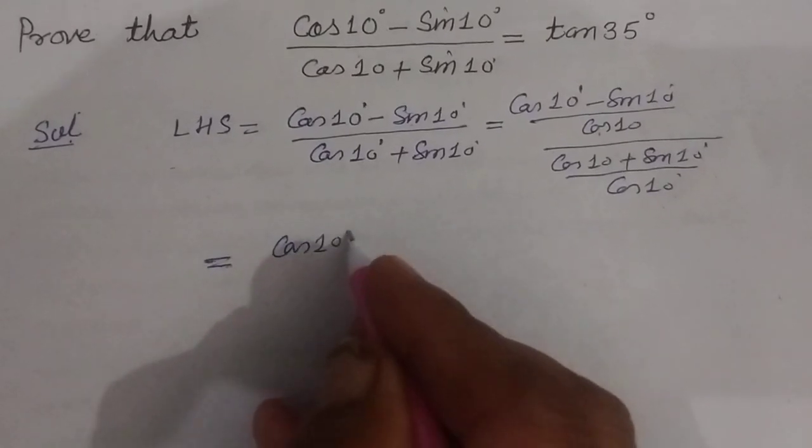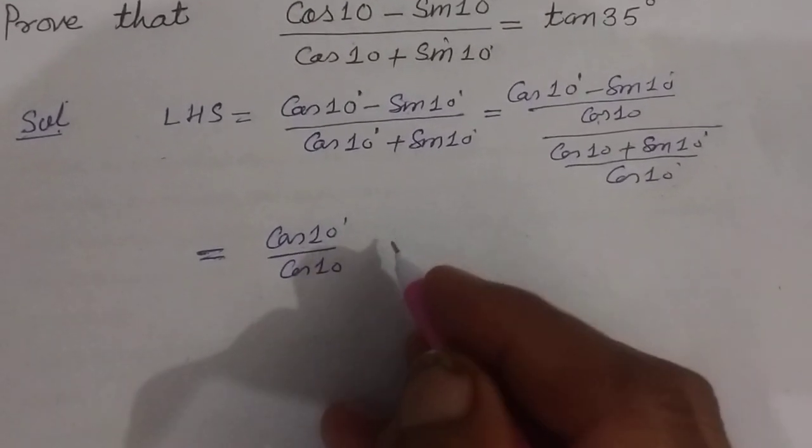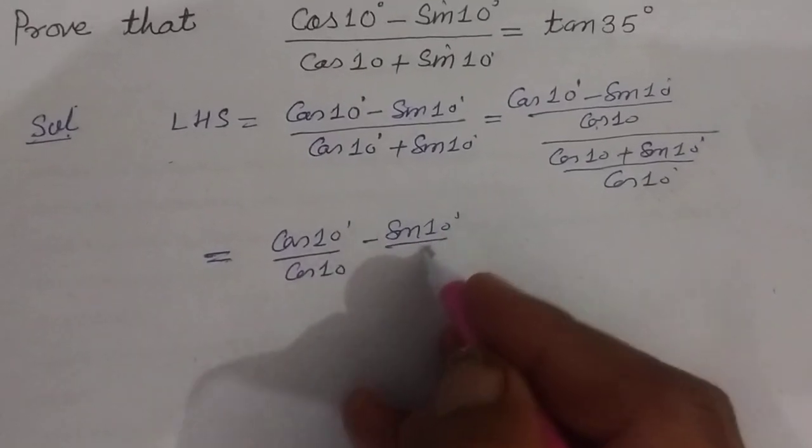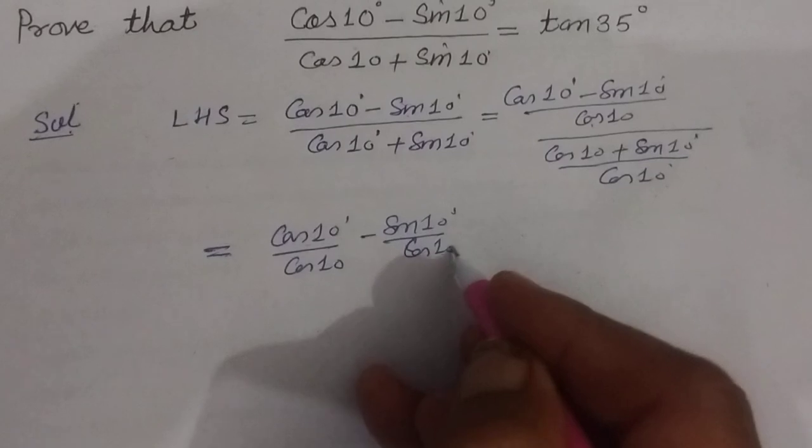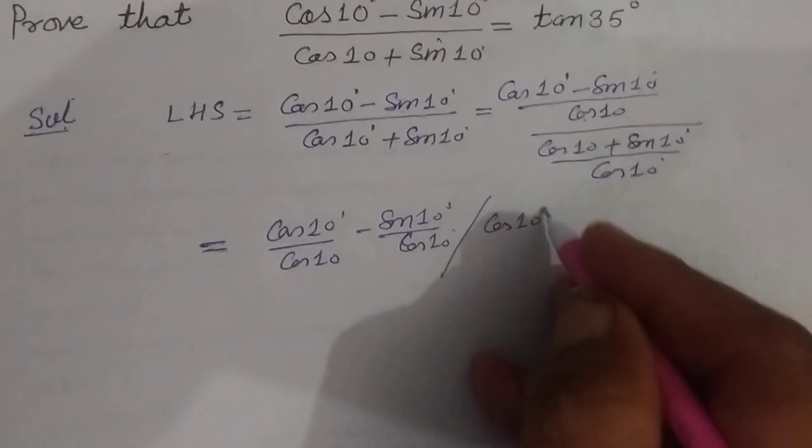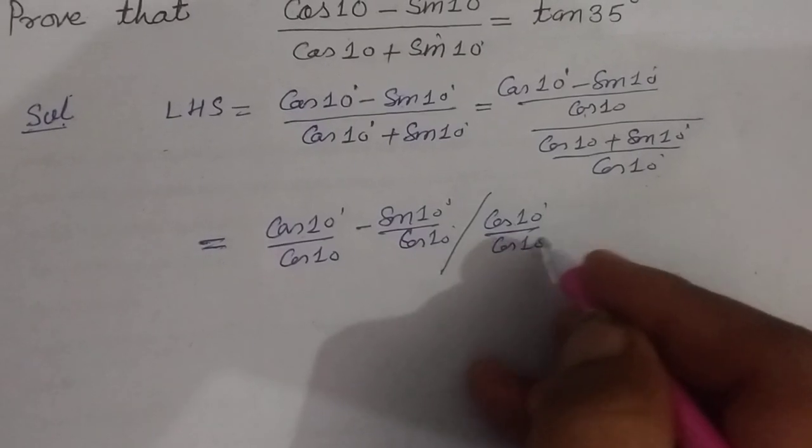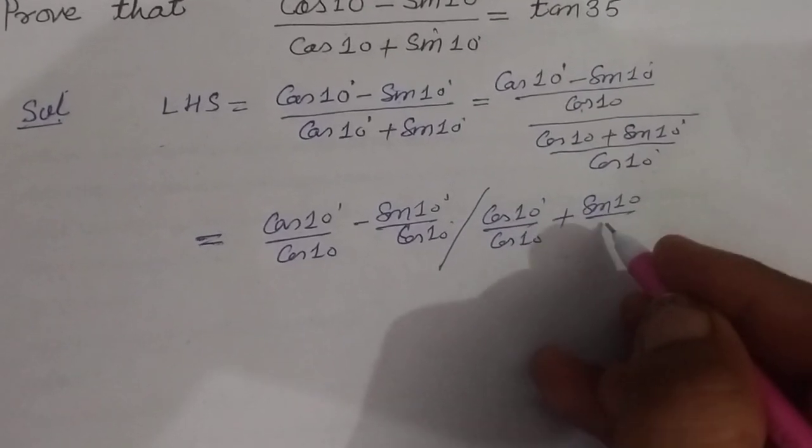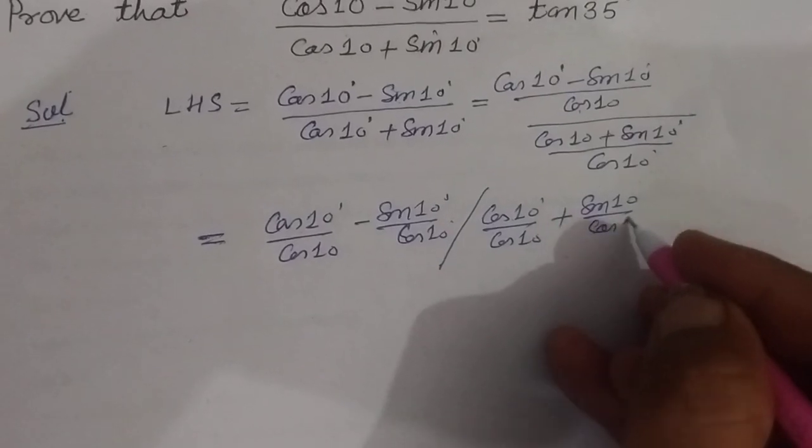So cos 10 upon cos 10 minus sin 10 upon cos 10, over cos 10 upon cos 10 plus sin 10 upon cos 10.